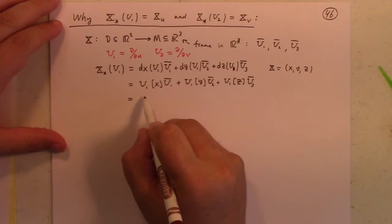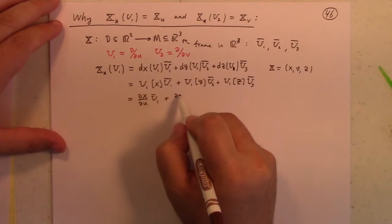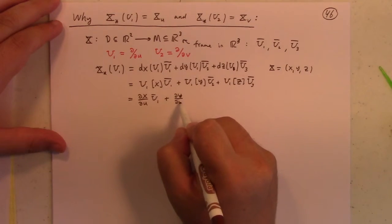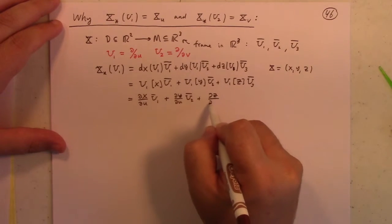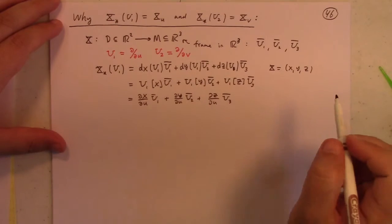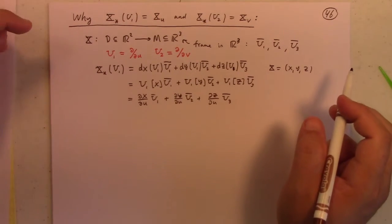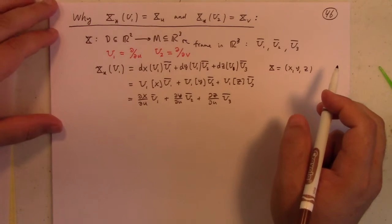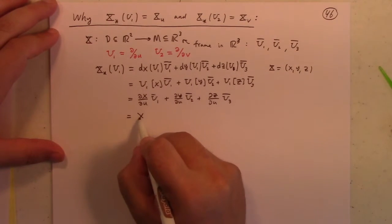So, but what is that? Well, that's partial X partial U, U1 plus partial Y partial U, U2 plus partial Z partial U, U3. Well, that's exactly the velocity vector to the U-coordinate curve of the patch. In other words, that is precisely X sub U.